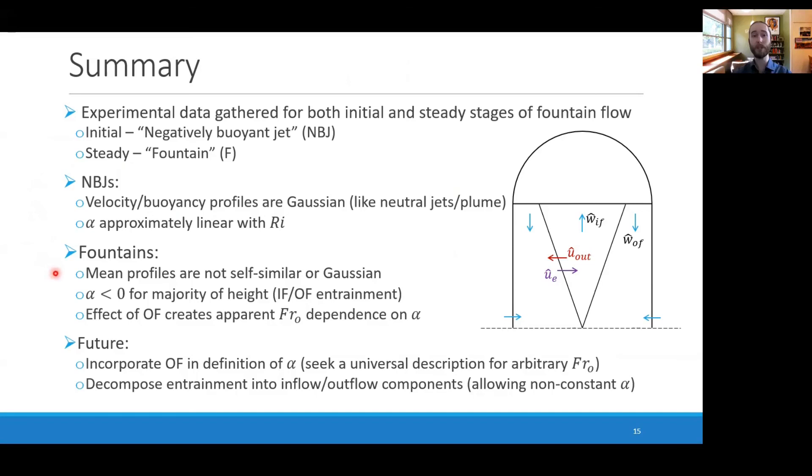In fountains, the mean profiles are not Gaussian and they're not self-similar, except there is a degree of similarity in the inner flow. The entrainment coefficient describing flow between the inner flow and the outer flow regions is negative for the majority of the height, indicating fluid is being expelled from the inner flow into the outer flow.